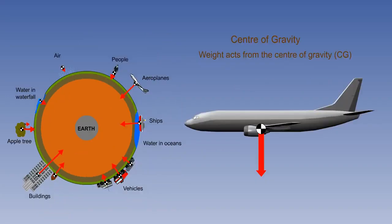The force of weight is taken to act from a single point within the body, which is called the centre of gravity. An aircraft's weight acts from its centre of gravity. For an aeroplane to maintain stable flight and have sufficient control, the aeroplane's centre of gravity must be within a safe narrow range.